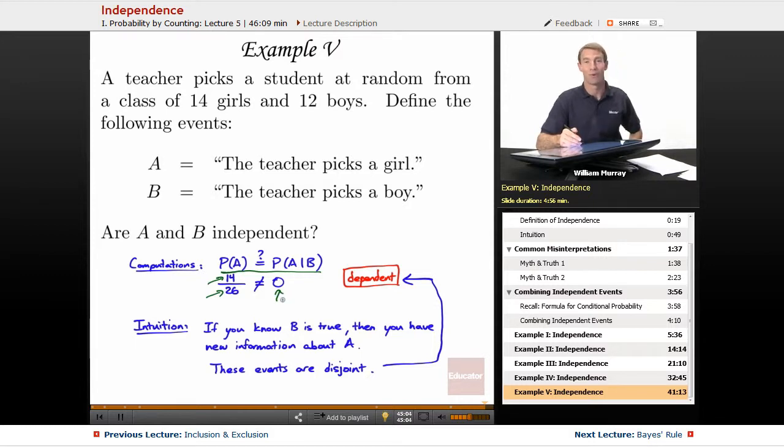That would be zero, because if we picked a boy, we couldn't have picked a girl. Now those two numbers didn't come out to be equal to each other, so that's how we know that they're dependent. That's how you do it by the computations.